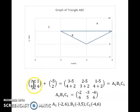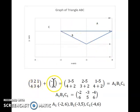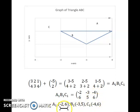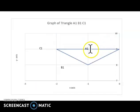To perform the first translation, put all coordinates of A, B, and C into one big matrix, then add the translation matrix T = (−5, 2). Pay attention to signs when performing the addition. This produces the image coordinates A1, B1, C1. Simplifying, we get (−2, 6), (−3, 5), and (−4, 6), meaning A1 = (−2, 6), B1 = (−3, 5), and C1 = (−4, 6).